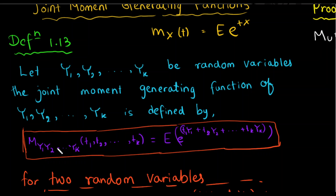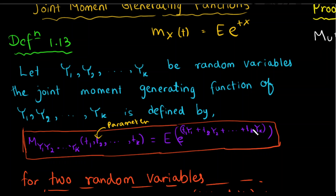The joint moment generating function m(y1, y2, ..., yk) has parameters t1, t2, ..., tk. It is defined as the expectation of e to the power t1*y1 + t2*y2 + ... + tk*yk. This is the definition.